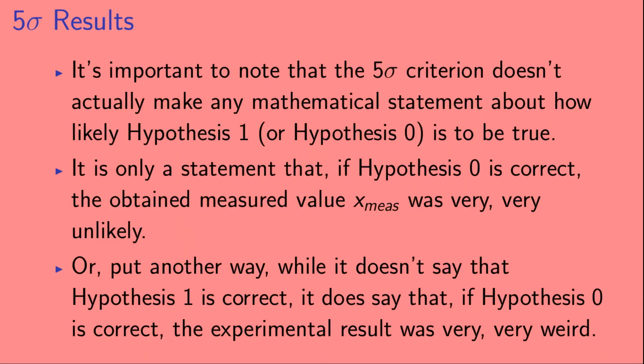Now, it's important to note that the 5 sigma criterion doesn't actually make any mathematical statement about how likely hypothesis 1 or hypothesis 0 is to be true. It is only a statement that if hypothesis 0 is correct, the obtained measured value, x_meas, was very, very unlikely. Or, put another way, while it doesn't say that hypothesis 1 is correct, it does say that if hypothesis 0 is correct, the experimental result was very, very weird.